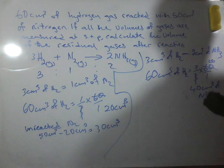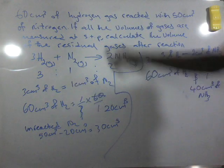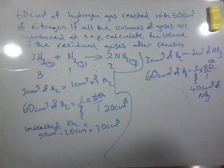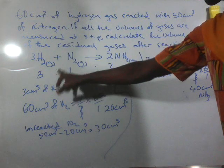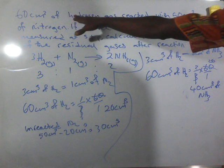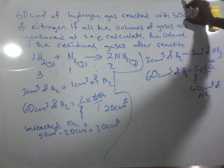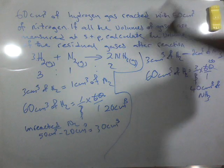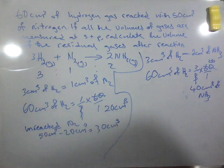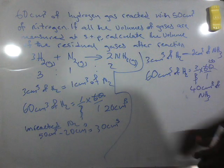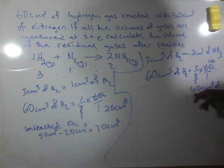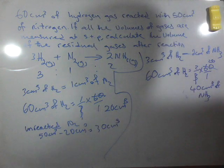Now the question said calculate the volume of the residual gas that we form. After the reaction, 60 cm³ of hydrogen completely combined with 20 cm³ of nitrogen, meaning that there will be no more hydrogen present. In 50 cm³ of nitrogen, 20 cm³ combined, leaving us with a residual volume of 30 cm³. Ammonia that is formed plus residual nitrogen will give us 40 plus 30.